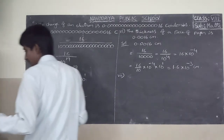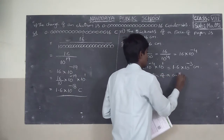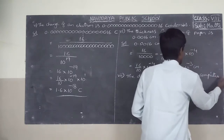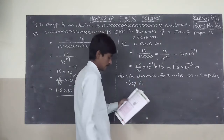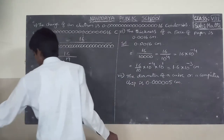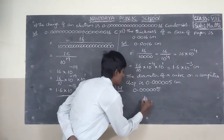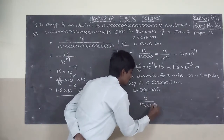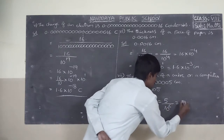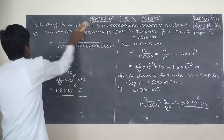Seventh one: the diameter of an oil molecule chip is 0.000005 centimetres. Count: 5 by 6 digits — 1, 2, 3, 4, 5, 6 after decimal point. So 5 by 10 to the power of 6, which equals 5 into 10 to the power of minus 6 centimetres.